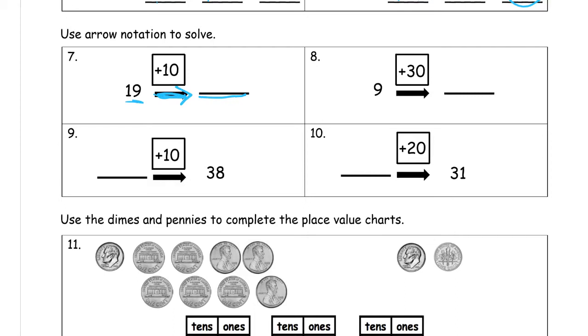And then what comes next is what happened after you did something to it. You can either add or subtract with arrow way. There's other things you can do too, but right now we're just adding and subtracting. So 19, adding 10 to it, 29.